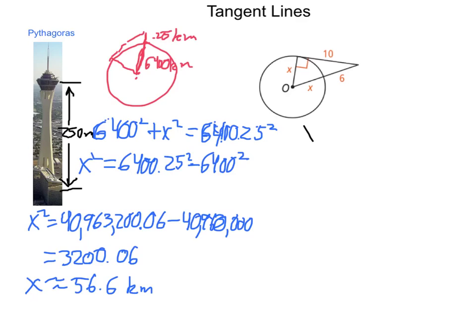And then we can find out our other pieces. So we would have x squared plus 10 squared is equal to that hypotenuse, x plus 6 squared.